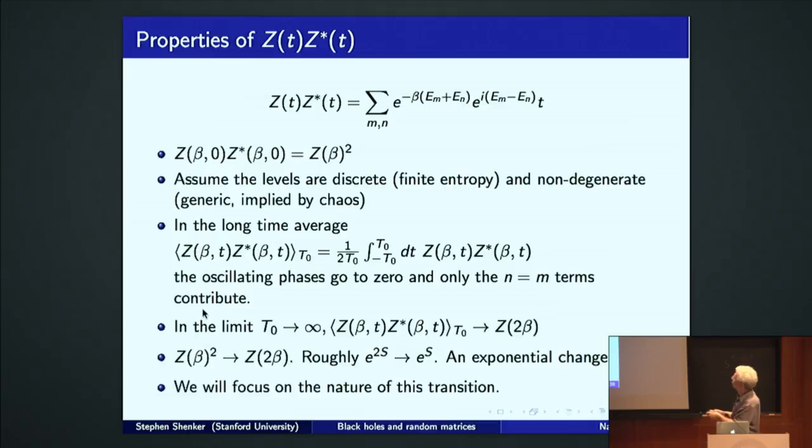So in that limit, just keeping m equals n reduces to a single sum, and you get one partition function, but at twice the beta, because you have two terms there. So in the long time averaging limit, this quantity goes to z of two beta.